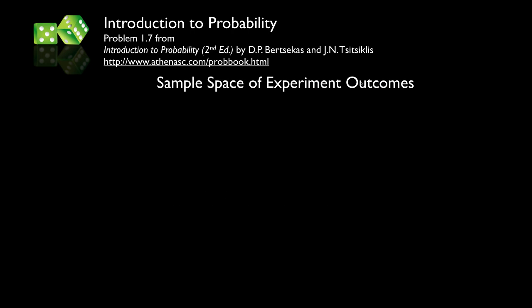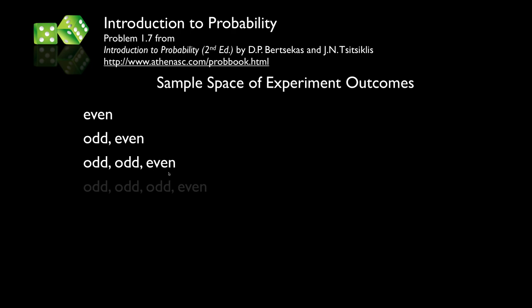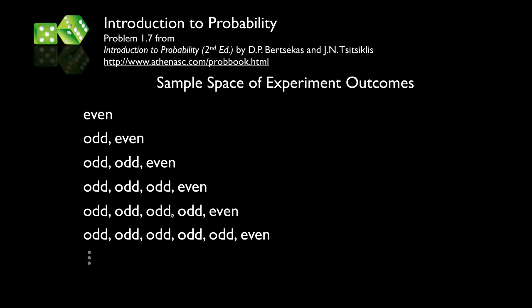The sample space of experiment outcomes is determined by the stopping rule: we stop rolling as soon as we see an even outcome. One possible outcome is that the first roll is even. If the first roll is odd, we roll again; if that roll is even, we stop — giving outcome odd, even. Further outcomes include: odd-odd-even; odd-odd-odd-even; odd-odd-odd-odd-even; and so on. Any sequence of odds terminated by an even makes up the sample space. This sequence can be arbitrarily long, making the sample space infinite.